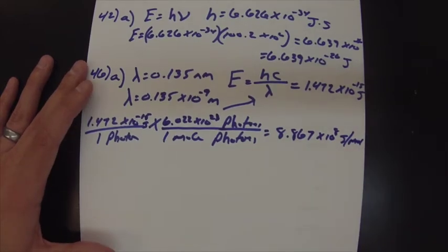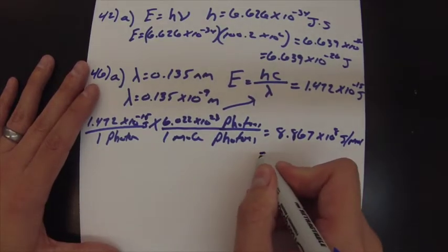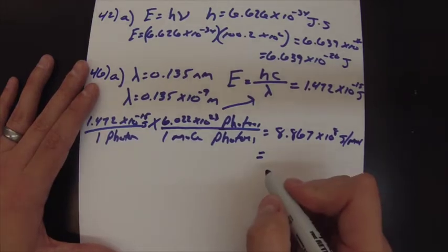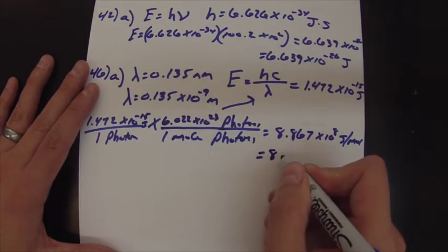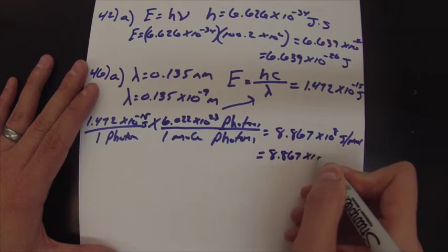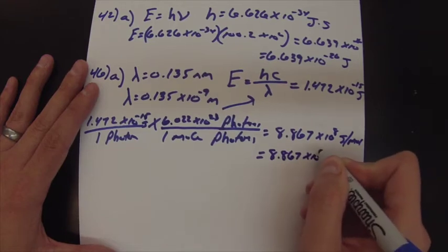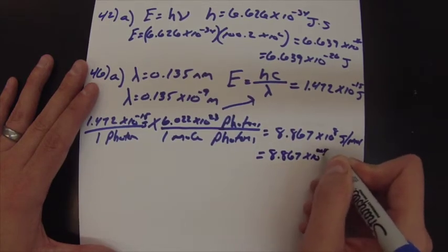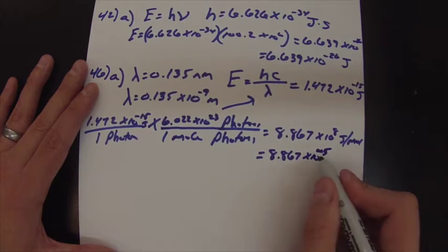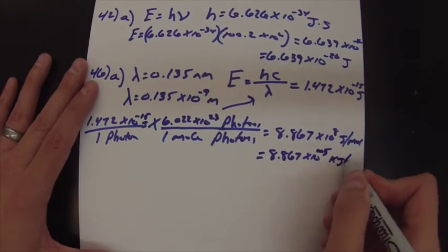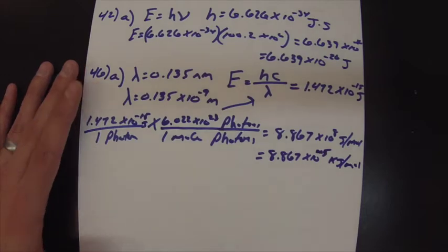And if you want to be fancy, these values are usually represented in kilojoules per mole. So converting, that's 8.867 × 10⁵ kilojoules per mole.